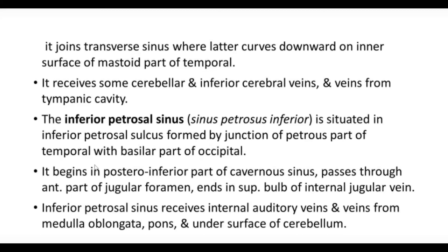The inferior petrosal sinus receives the internal auditory veins and veins from the medulla oblongata. The internal auditory vein is accompanied by the seventh cranial nerve (facial nerve), the vestibulocochlear nerve, and the nervus intermedius - these three nerves pass through the internal acoustic meatus. The auditory vein drains from the internal ear into the inferior petrosal sinus.